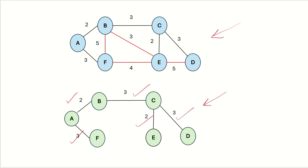We verify: the number of edges is 5, all vertices of the input graph are present in the MST, and there are no cycles. Every time we choose an edge from the queue, we must ensure that one of its vertices is not yet in the MST, otherwise it will cause a cycle. This is how Prim's algorithm works to help us find the minimum spanning tree.